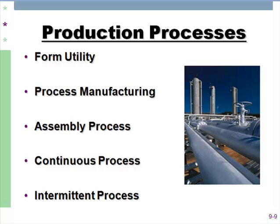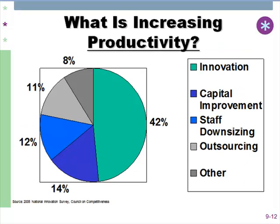When looking at all these production processes, you might ask what increases productivity the most. You might be shocked, but the number one thing that increases productivity is innovation — nearly half of all productivity comes through innovation. And I'm not talking about capital improvements like a new fryer or piece of equipment. It's those radical changes, new concepts or new ways of doing things that radically change productivity.